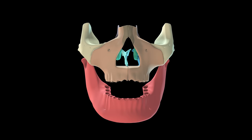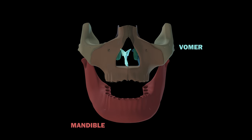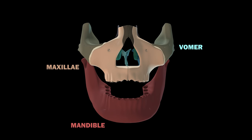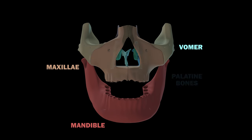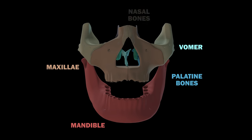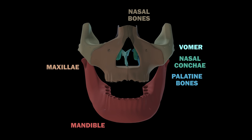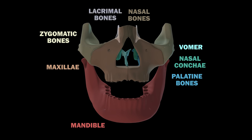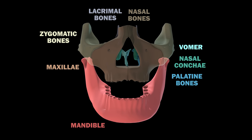Now for the facial bones. The facial bones include the mandible, the vomer, a pair of maxillae, a pair of palatine bones, a pair of nasal bones, a pair of nasal conchi, a pair of zygomatic bones, and a pair of lacrimal bones.